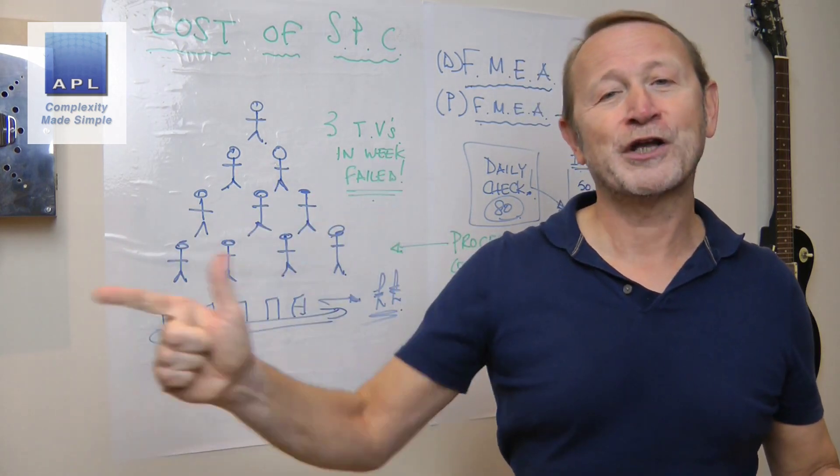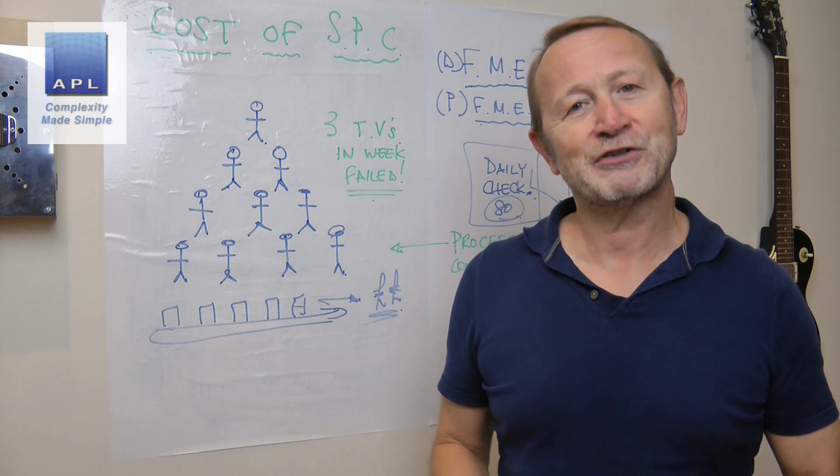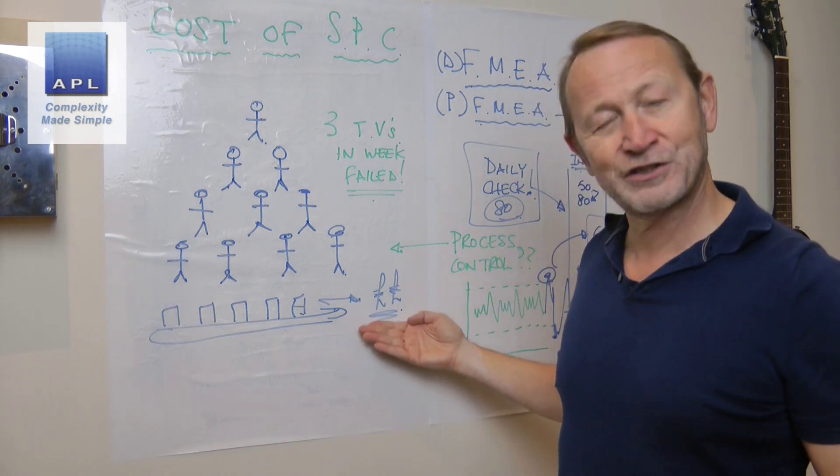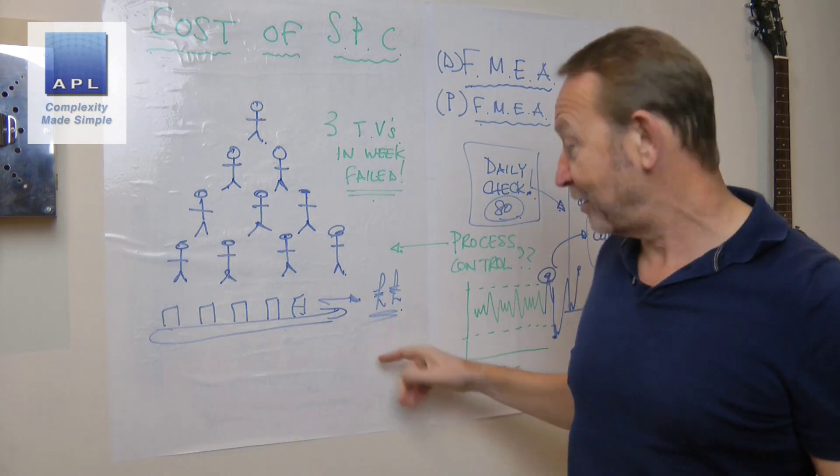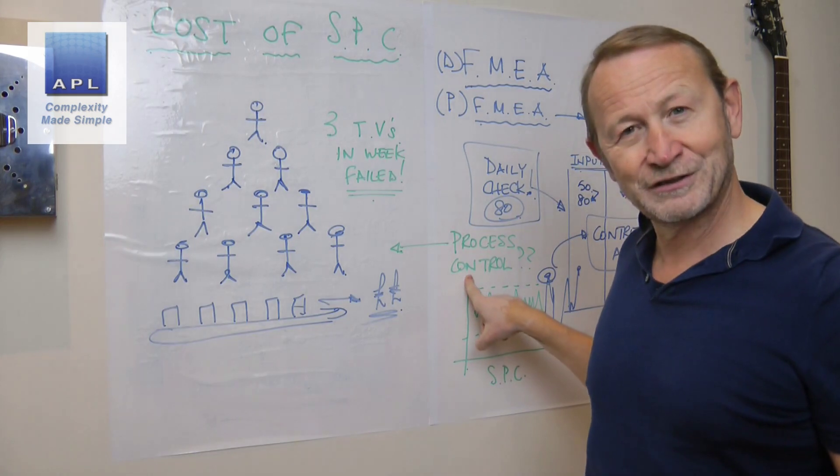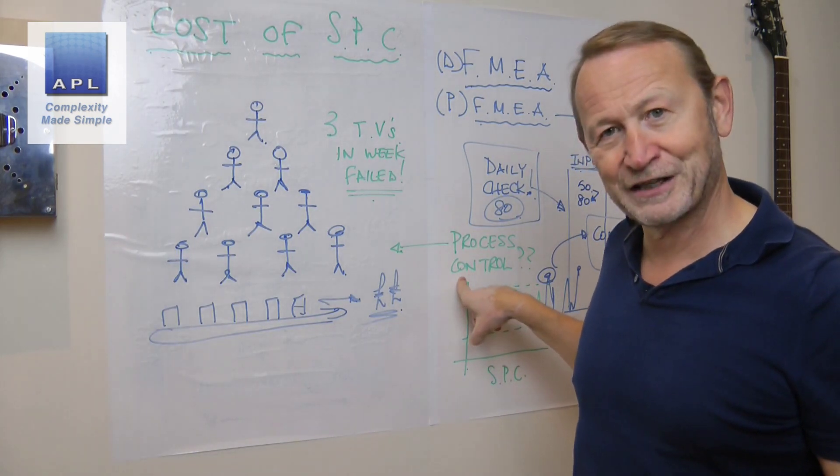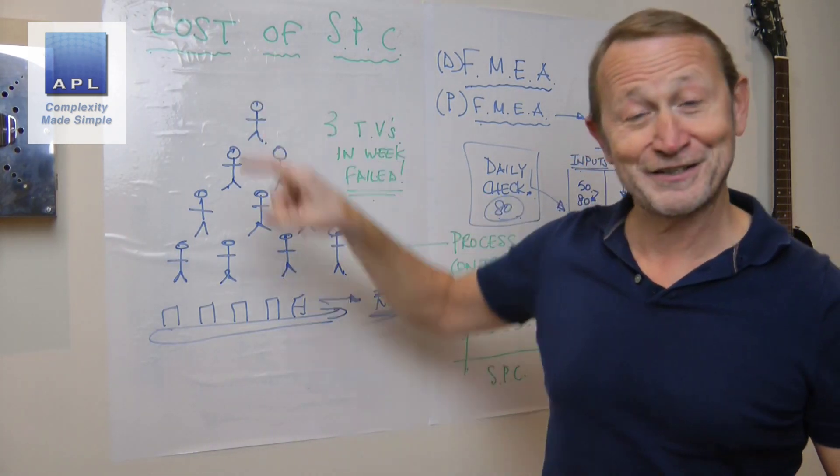This thing will make bucket loads of money for somebody, whether it's your suppliers because you're throwing material in the bin, or it's you because you're giving material to your customers. But either way, this thing's going to move bucket loads of cash. Don't you want this? This is the cost-effective thing to do, and this is the cost-effective way to do it.